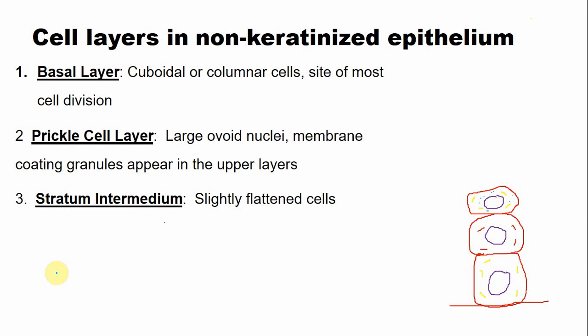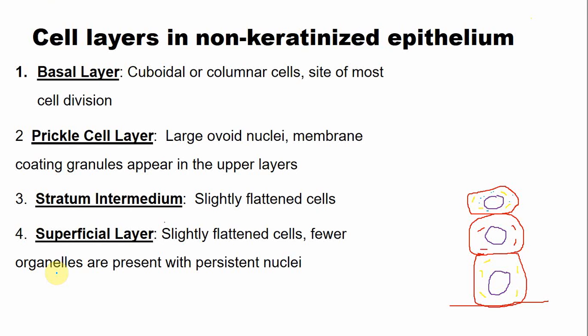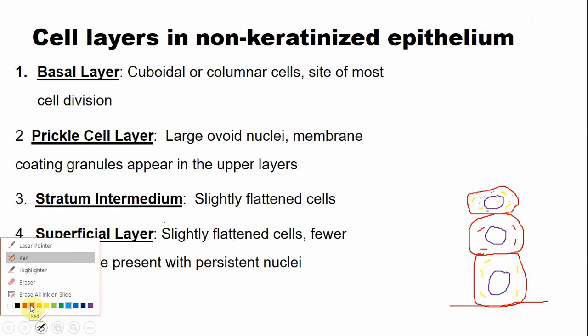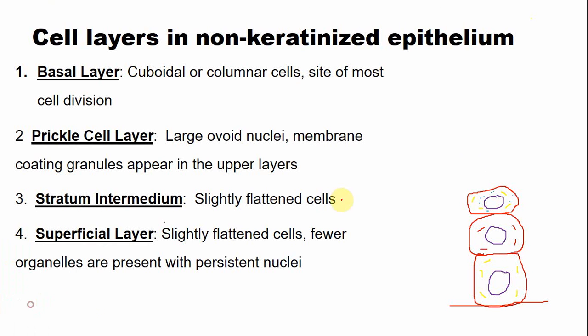The last cell layer, or the most superficial layer, in a non-keratinized epithelium is the superficial layer, or stratum superficiale. This stratum superficiale comprises flattened cells that are slightly flattened as compared to a keratinized epithelium.